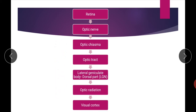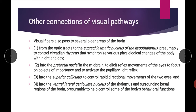Now we look at the other connections of the visual pathway. There are several collaterals or branches from the visual pathway that go to surrounding CNS areas and have roles in other functions. For example, from the optic tract to the suprachiasmatic nucleus of the hypothalamus, presumably to control circadian rhythm, which synchronizes various physiological changes of the body with night and day.